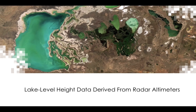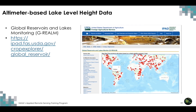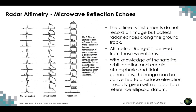Lake level height data derived from radar altimeters are available from the Global Reservoirs and Lakes Monitor, or G-REALM portal, from the Foreign Agricultural Service of the USDA. This is the Crop Explorer site, which provides information about lake level height at lakes shown there. Before we look at the site and see how to get this data, let's have an overview of how lake height is actually derived.